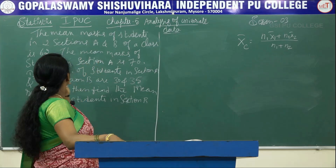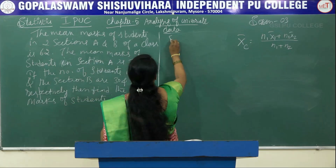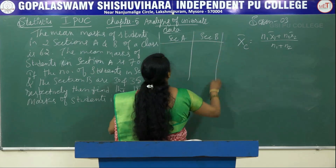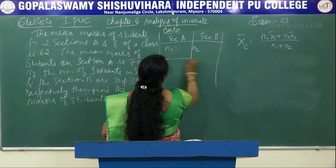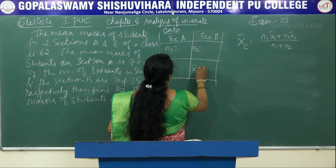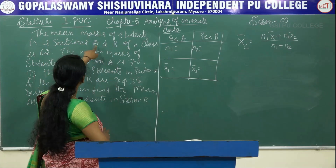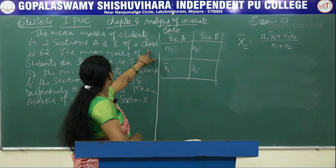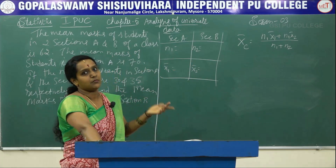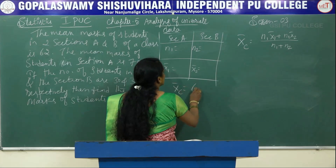We have two sections, A and B. The mean marks of students in both sections A and B combined is 62, so the combined arithmetic mean x̄c is already given as 62. The mean marks of students in section A, that is x̄₁, is 70.